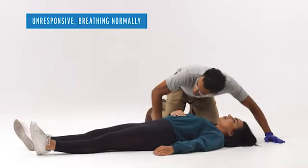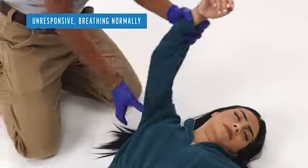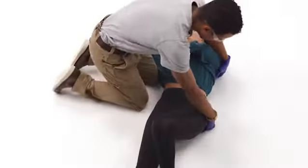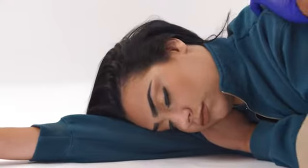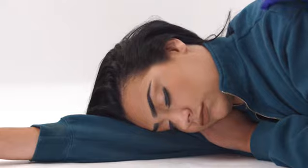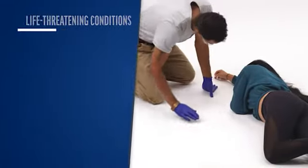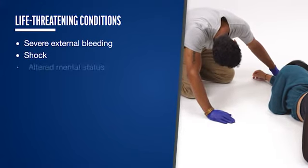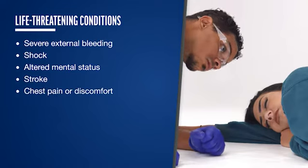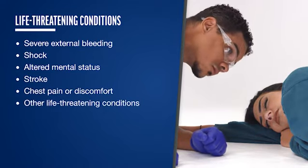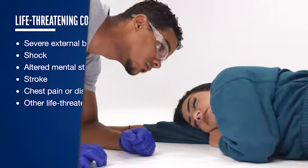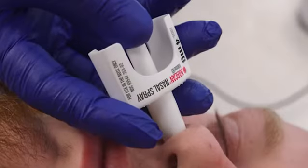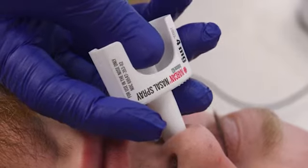If the person is unresponsive and breathing normally, maintain an open airway. Place an uninjured, unresponsive person on their side in the recovery position to help protect the airway. Rapidly scan the person for life-threatening conditions. Look for severe external bleeding, shock, altered mental status, stroke, chest pain or discomfort, and other life-threatening conditions. If present, immediately provide appropriate first aid. Give naloxone for a suspected opioid overdose, if available.